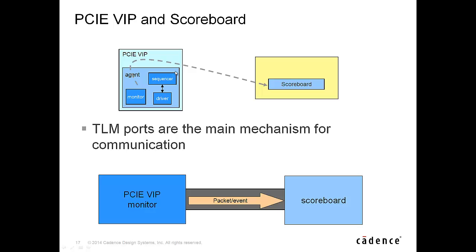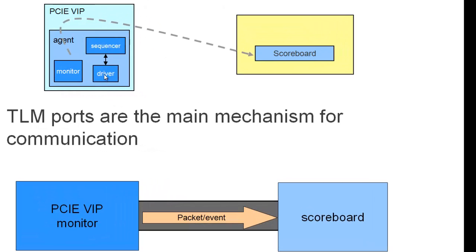PCI Express VIP is an encapsulated verification component with sequencer, driver, and monitor. Each monitor has many UVM analysis ports which allow the data to be transferred from the monitor to the scoreboard. So, the main communication mechanism between the PCI Express monitor and scoreboard is via TLM ports.